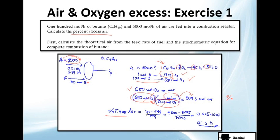Let's calculate the excess as inlet minus required, divided by the required. The inlet is 5000 mol of air, minus the required, which is the one we calculated here, divided by this same number here. They will give you 0.61, or 61%.